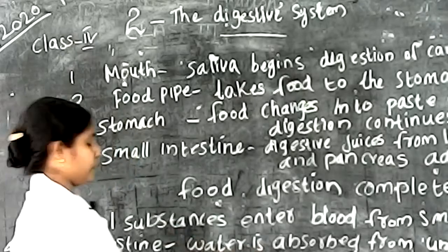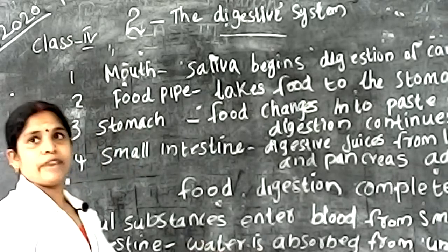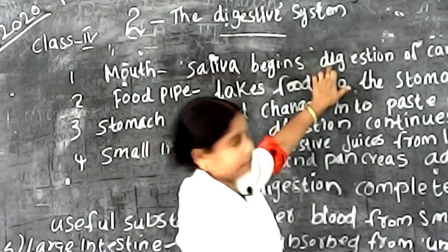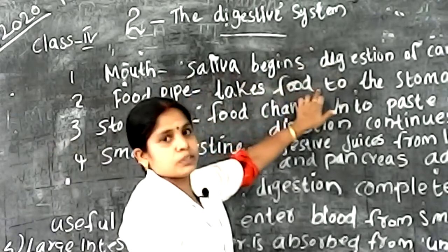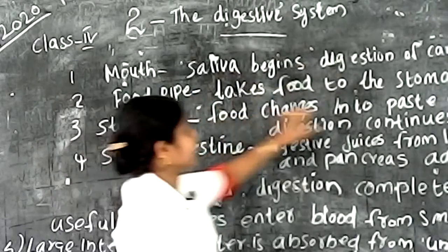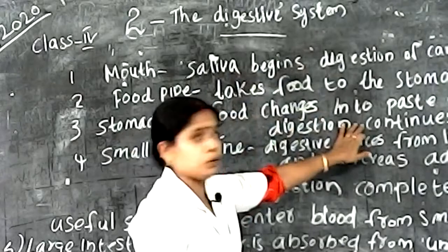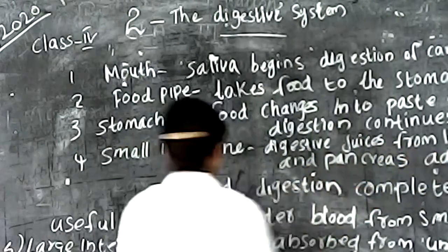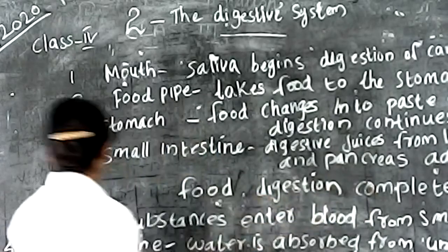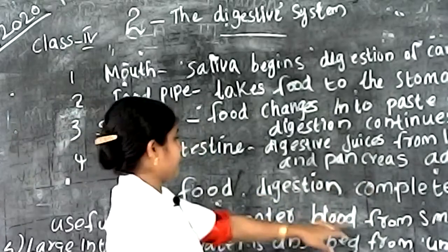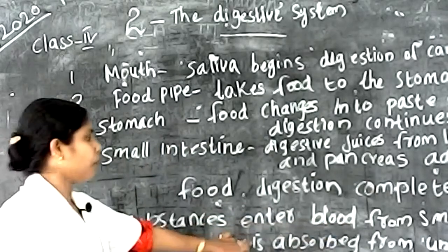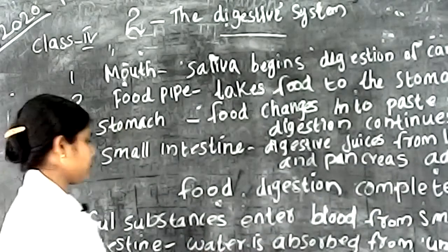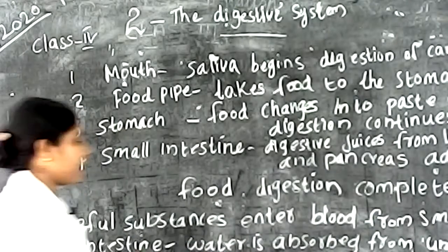Rectum stores waste and the anus discards waste. Mouth: saliva begins digestion of carbohydrates. Food pipe: takes food to the stomach. Stomach: food changes into paste and digestion continues. Small intestine: digestive juices from liver and pancreas added to food, digestion completed. Useful substances absorbed from small intestine into the blood. Large intestine: water absorbed from undigested food and passed on to the blood. Rectum stores waste.